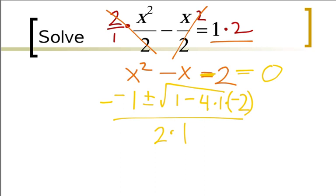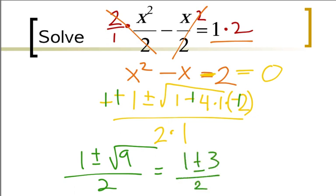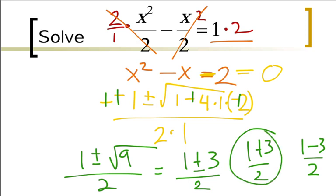To simplify, I change the signs here and get 1 plus or minus the square root of 1 plus 8 which is 9, all over 2. This turns into 1 plus or minus 3 over 2. So I get my two answers: 1 plus 3 over 2, and 1 minus 3 over 2. That works out to be 4 over 2 which is 2, and 1 minus 3 is negative 2 over 2 which is negative 1. These will be my two answers.